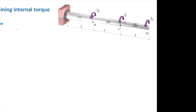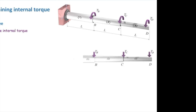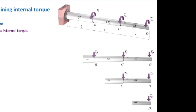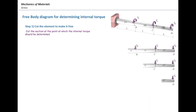The right part is free, so I'm going to consider the right part as shown here. What if I want to determine internal torque in shaft 2? I'm going to cut the shaft somewhere between B and C, and this would be the free body. If I want to determine the internal torque in shaft 3, I'm going to cut it between C and D, and I would have this shape — that is the cut part.